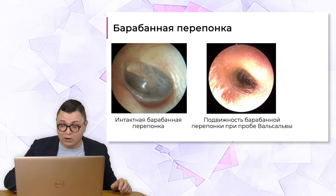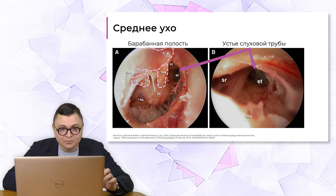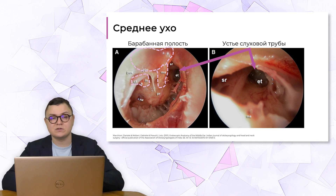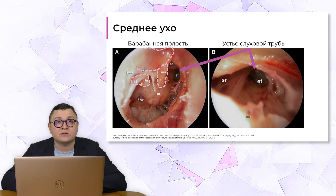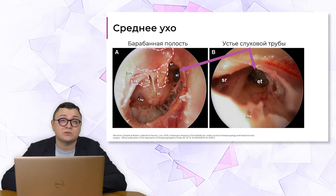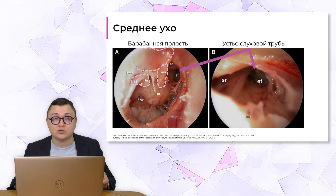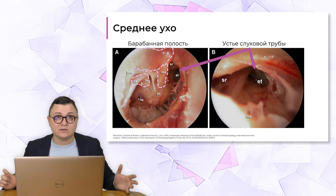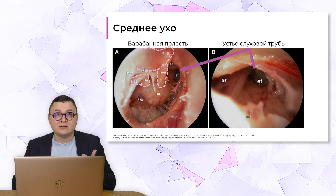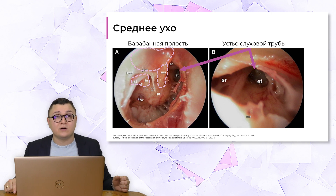Где находятся устья слуховой трубы в барабанной полости? Если убрать контур барабанной перепонки, пунктиром выделены проекции косточек: рукоятка молоточка, головка молоточка, наковальня, наковально-стремянное сочленение. В передних отделах барабанной полости – промонториум, мыс. Впереди барабанная полость продолжается в слуховую трубу, которая через несколько сантиметров открывается глоточным устьем. Через эту трубу происходит вентиляция. Всё это анатомически абсолютно доступно, учитывая современное развитие эндоскопической аппаратуры.